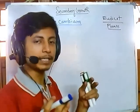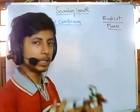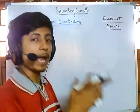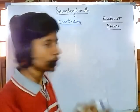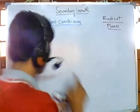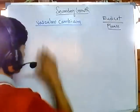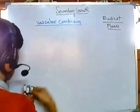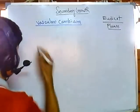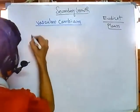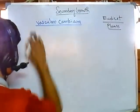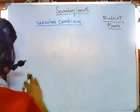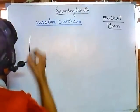Vascular cambium is a very important tissue. This tissue is living and it is dividing between the phloem and xylem. If we look at a plant from the cross section or longitudinal section, it will look something like this.